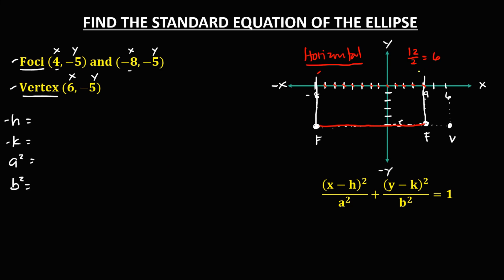So we have 12 divided by 2 equals 6. Therefore, we count 6 units from the focus to locate the center: 1, 2, 3, 4, 5, 6. This is the center of the ellipse. The coordinate of the center: x is negative 2 and y is negative 5. So h is negative 2 and k is negative 5.